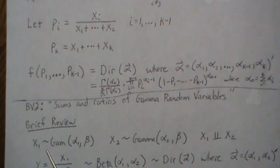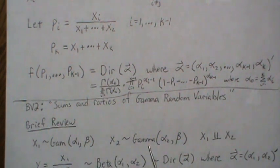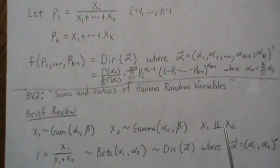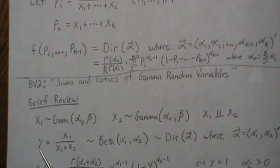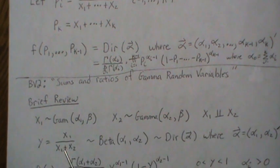And so, X1 was a gamma alpha 1 beta and X2 was gamma alpha 2 beta. They're independent. And we set up a transformation and we ended up Y was X1 over X2 and then we had Z, which is the sum.